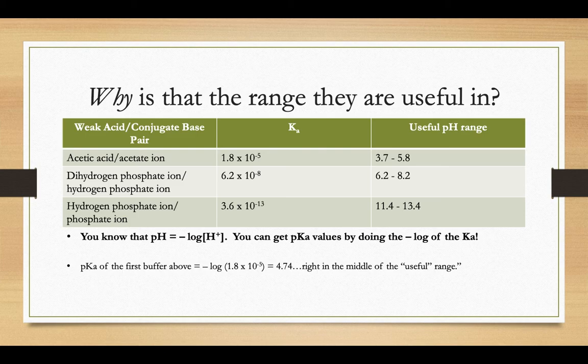Well, 4.74, that's right in the middle of the useful pH range. If the goal of a buffer is to try and react with whatever extra hydroxide or hydronium ions might be added to a solution to try and keep the pH relatively steady, if the pKa of that acid and conjugate base combination there of the buffer itself is 4.74, that means it can work in that pH range that's a little bit less and a little bit more.